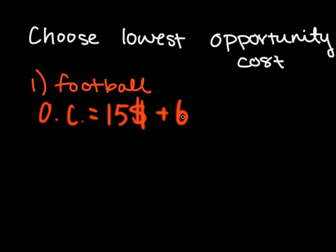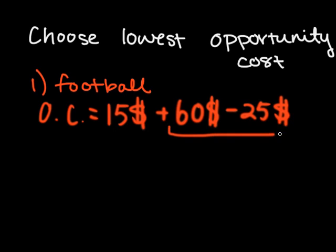But we also have to include the cost of the best foregone alternative. In this case, the movie would have given us $60 worth of benefit and it would cost $25 to go watch it. Now, $60 minus $25, you can sort of think of this value as the net benefit that you got from the movie that you did not get from going watch the football game.